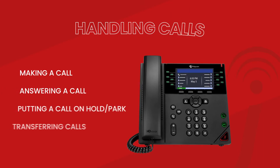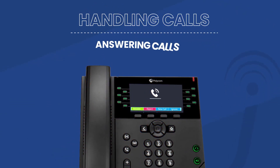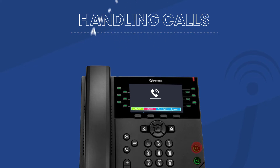When handling calls, making a call is just like a cell phone — you simply dial the number or extension first, and then press dial. The easiest way to redial the last number you called is to hit the home button and then press number 2 on the keypad. Answering a call is as simple as lifting the handset, pressing the speaker button, or pressing the headset button.